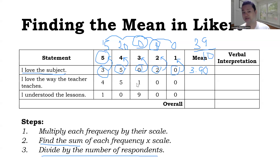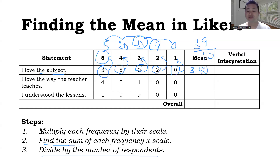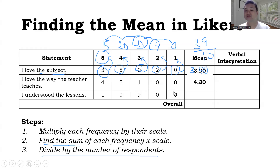Let's see other examples. For statement two: 4 times 5 is 20, 5 times 4 is also 20, 1 times 3 is 3, and 0 times 2 and 0 times 1 is zero. So we have 20 plus 20 equals 40, plus 3 is 43. So 43 divided by 10 is 4.30. For the last statement: 1 times 5, 0 times 4, 9 times 3, 0 times 2, 0 times 1. Adding all of those gives 32. Then 32 divided by 10 is 3.20.